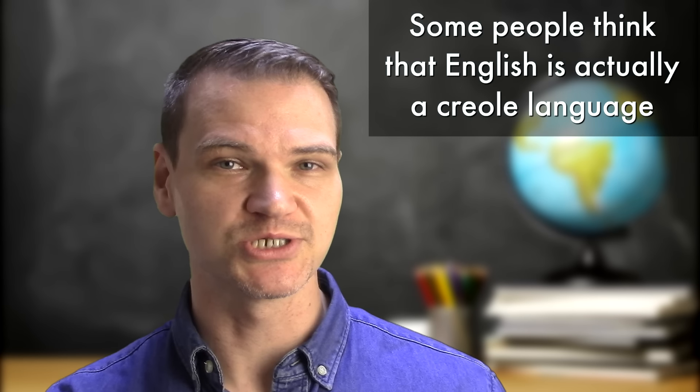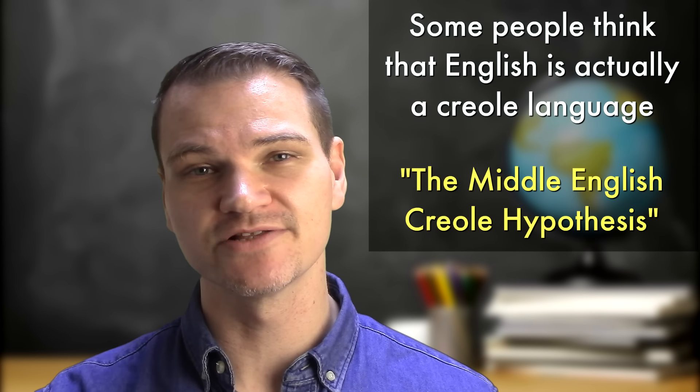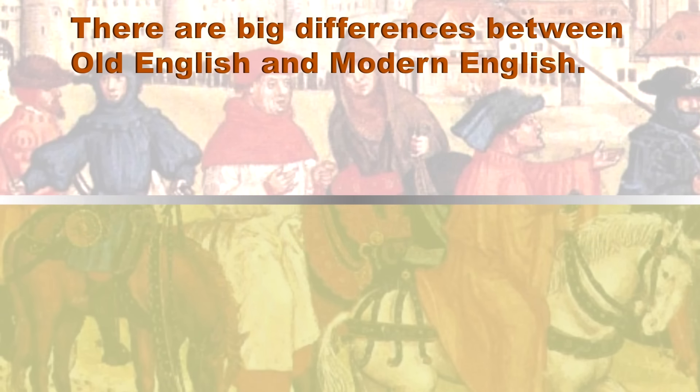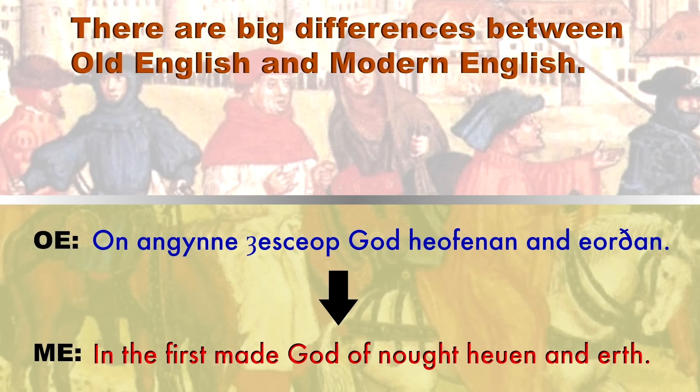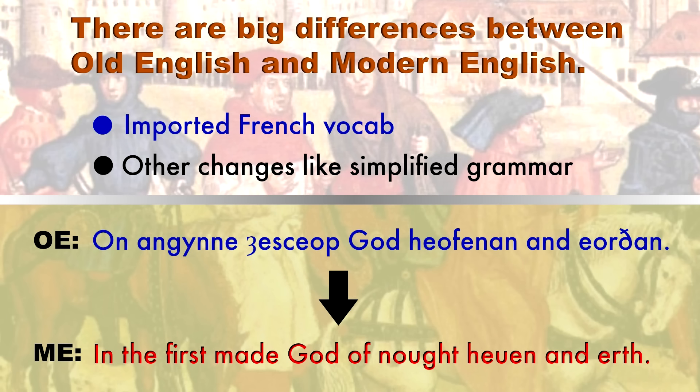Some people think that English is actually a Creole language. There's something called the Middle English Creole Hypothesis. There are big differences between Old English and Middle English. Of course, there was the importing of lots of French vocabulary, but that alone does not make it a Creole language. But there were other changes to the grammar of English, which became highly simplified.